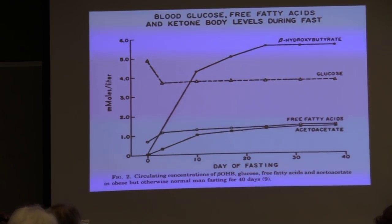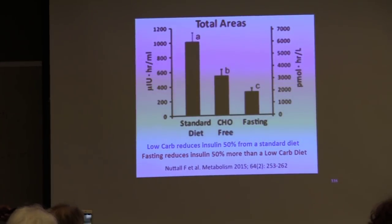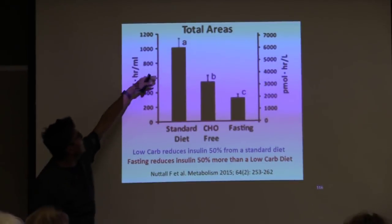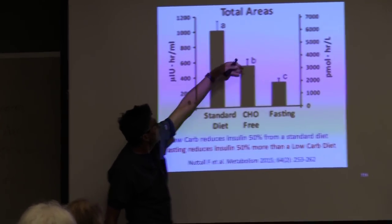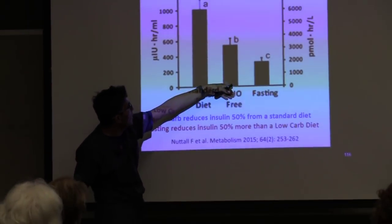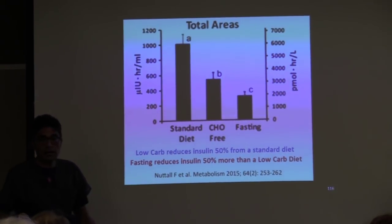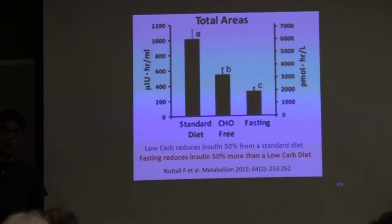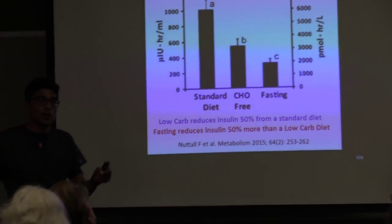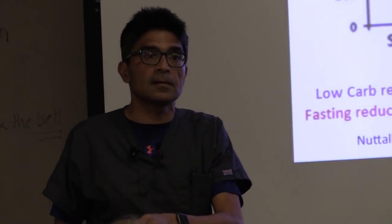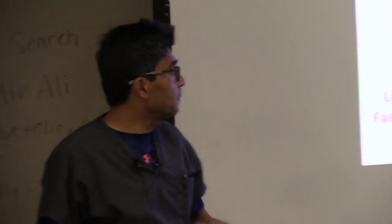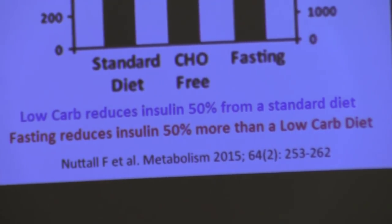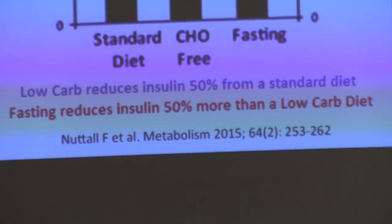This shows insulin levels: on the standard diet they are elevated, on the low-carb diet they fall about 50%. But what is more powerful than a low-carb diet at dropping insulin levels is fasting. You will not get used to fasting if you are on a carb-heavy diet.